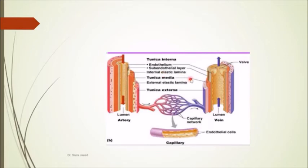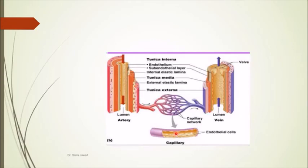Valves are present in veins but absent in arteries. Arteries have a thicker wall compared to veins. Arteries and veins become smaller and ultimately join to form the capillary network. This covers the histology of capillaries, arteries, and veins.